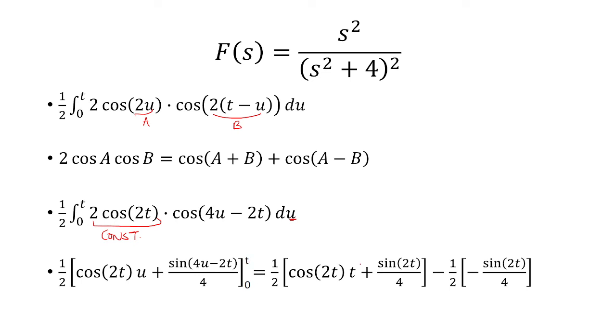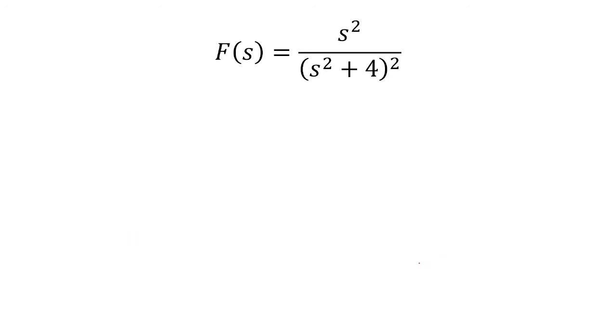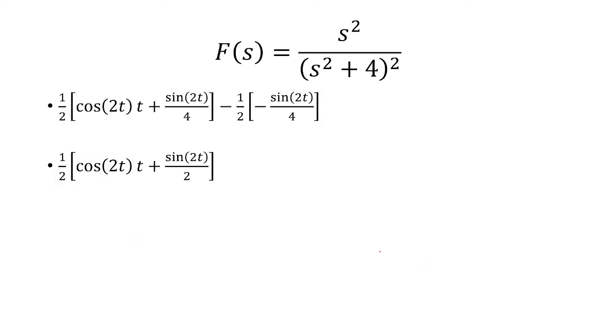Plug in t, plug in 0 to get to this expression. And now this simplifies to 1 half times the quantity cosine 2t times t plus sine 2t all over 2.